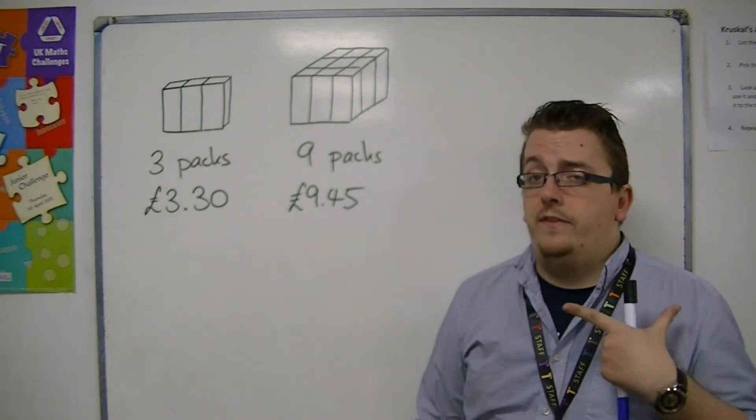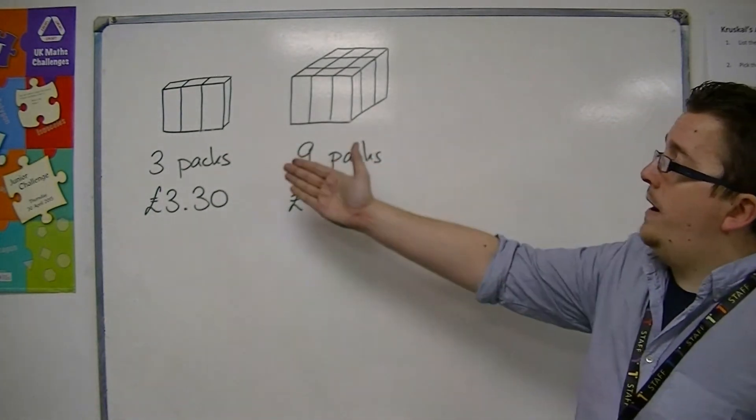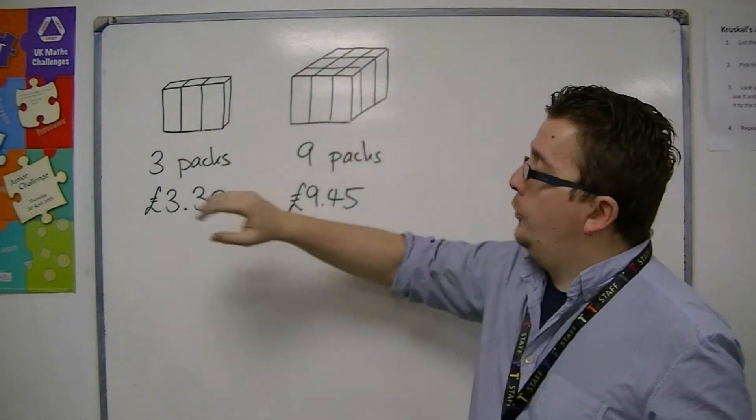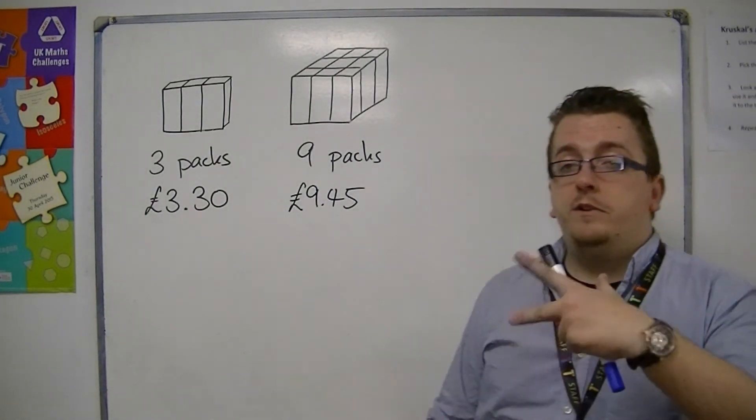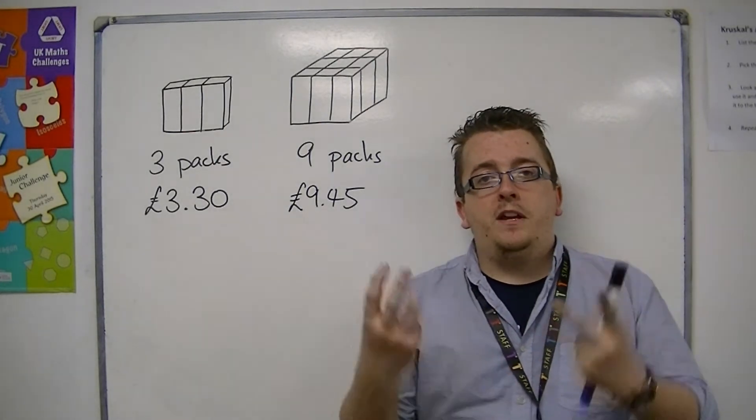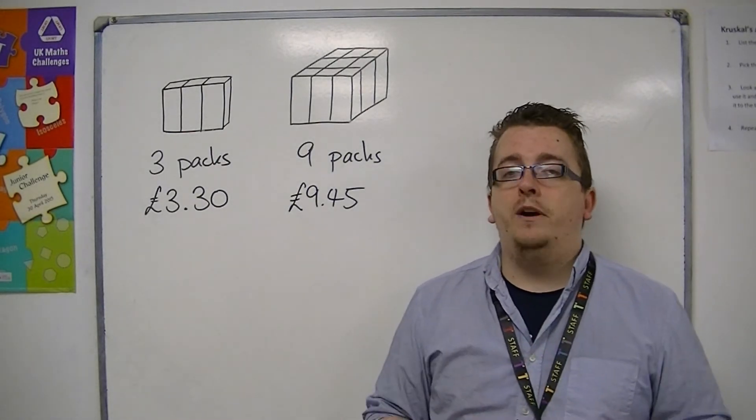Let's say that in this question we have three packs of an item cost £3.30, while nine packs cost £9.45. And I'm going to show you a couple of different ways of how you might solve this problem.